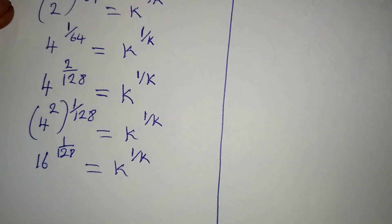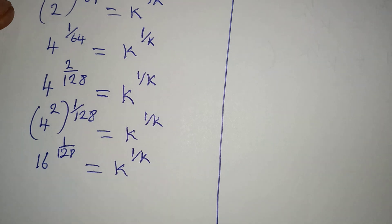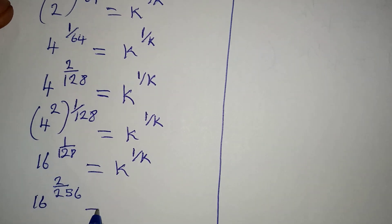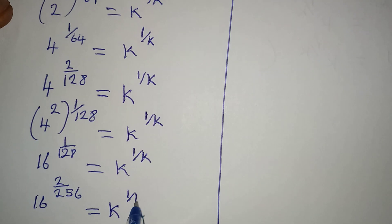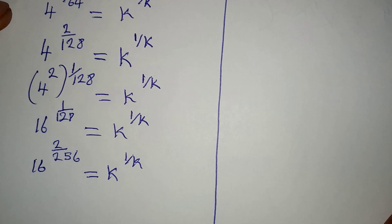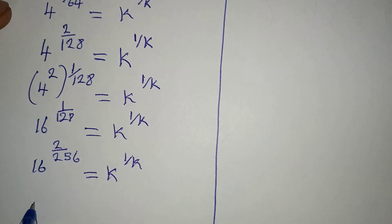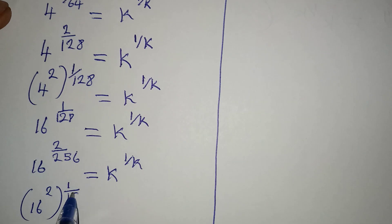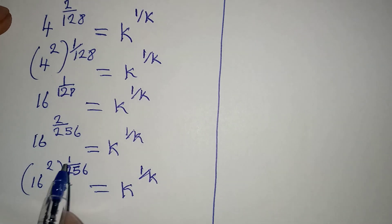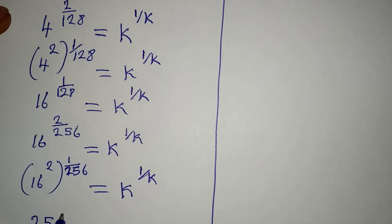Now I can still get another equivalent fraction. It is going to be 16 to the power of 2 over 256, because 128 times 2 gives us 256. And that will be equal to k to the power of 1 over k. Remember that 1 over 128 and 2 over 256 are the same thing because they are equivalent. Now I can arrange this to 16 squared to the power of 1 over 256. And this will be k to the power of 1 over k. So 16 squared gives us 256, and this is now raised to the power of 1 over 256.